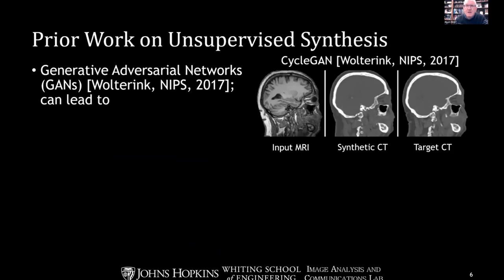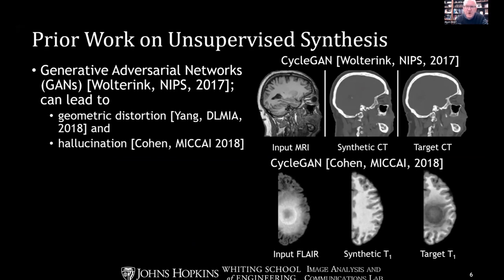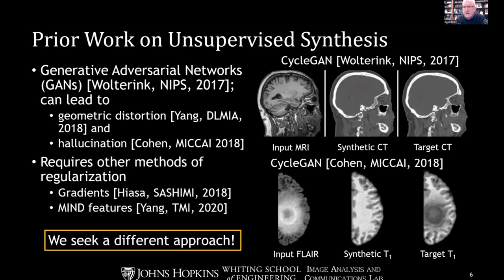Many of you might immediately say we have a solution for this. Generative adversarial networks are very successful in computing this kind of image translation across sites when you don't have matching data. This famous example from Walter et al. in 2017 showed how we could do that with MRI as input and CT as output. It was noted subsequently, however, that there were problems with geometric distortion and sometimes even hallucination. Although solutions have been proposed, we're looking at a different approach that hopefully won't have some of these difficulties.